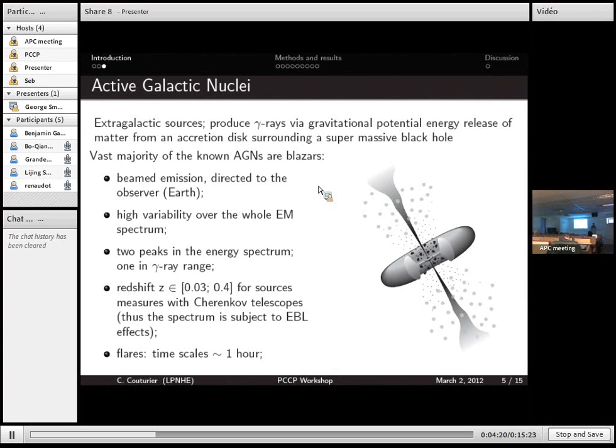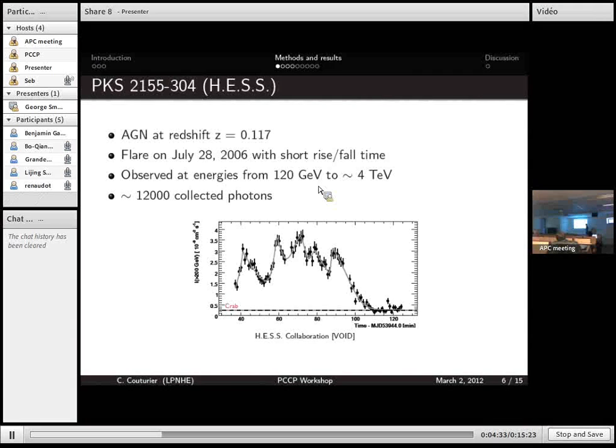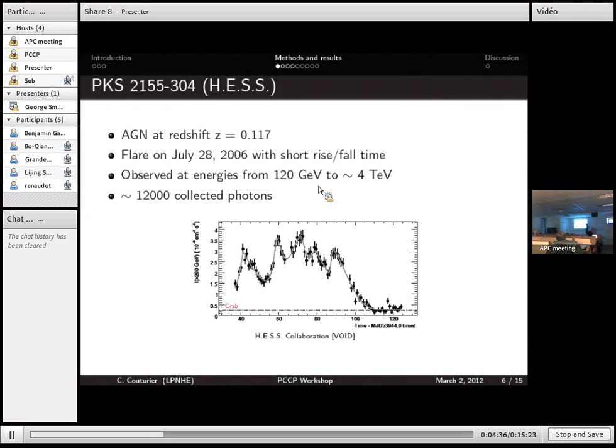So I picked the two most interesting AGNs we have so far for deriving limits on LIV effects. One of them is PKS 2155-304. It's located at redshift 0.1. In 2006, HESS has observed a flare of this object with energies of photons from 120 GeV to 4 TeV. And they have collected more than 10,000 photons. So here is the time distribution of the flare. Well, we call it light curve.